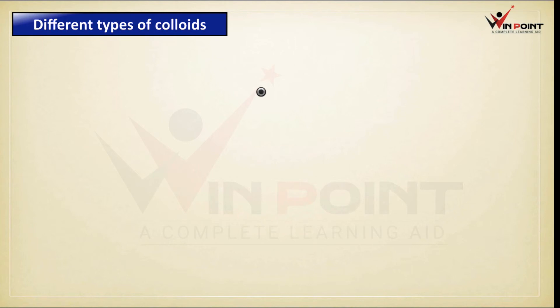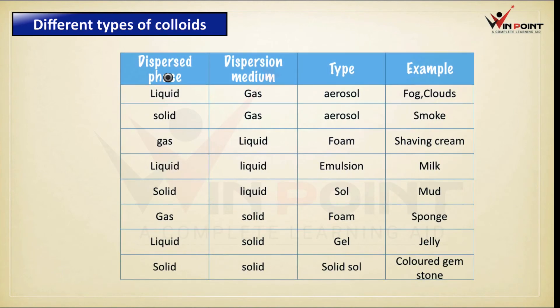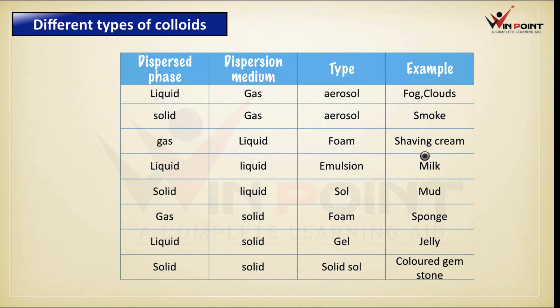There are different types of colloid according to the nature of the dispersed phase and dispersion medium. If the dispersed phase is liquid and the dispersion medium is gas, it is known as aerosol — examples are fog and clouds. If the dispersed phase is solid and the dispersion medium is gas, it is also an aerosol — example is smoke. If the dispersed phase is gas and the dispersion medium is liquid, it is known as foam — example is shaving cream.